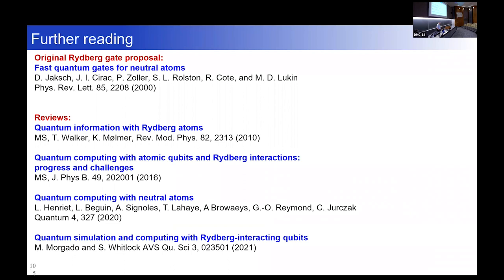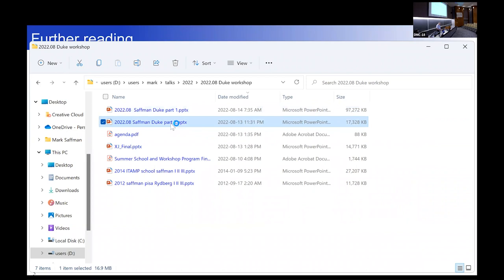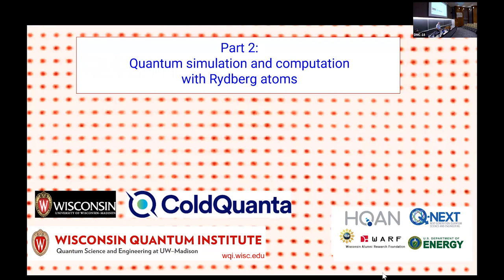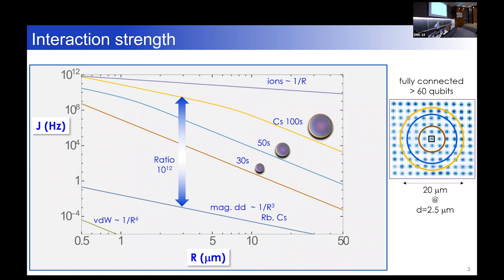That was Rydberg interactions. Now we're going to turn to quantum simulation and computation. I want to cover four topics: different regimes of interaction, Rydberg quantum simulators — I won't say much about the analog simulators since I don't personally work with those experiments — and then Rydberg gates and recent work with digital quantum computers with Rydberg gates.